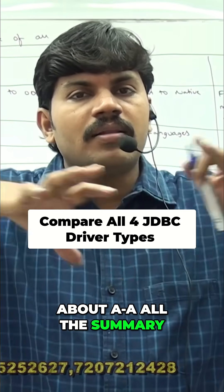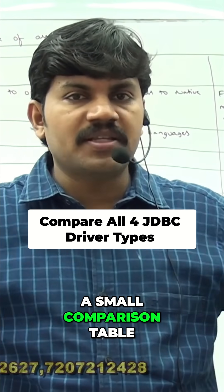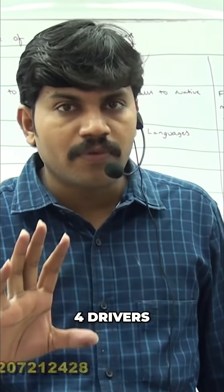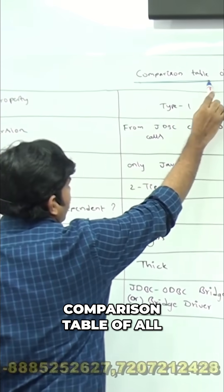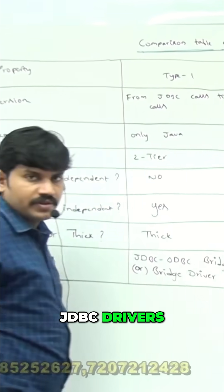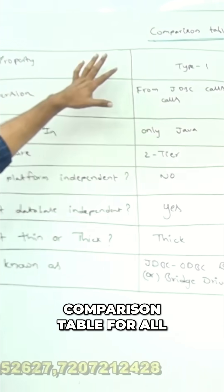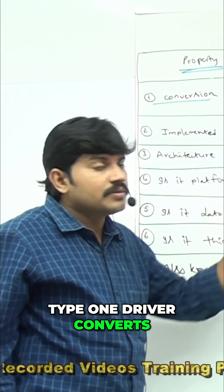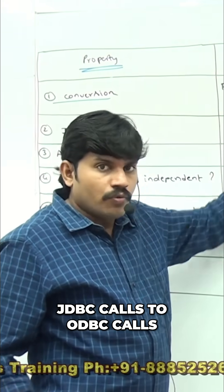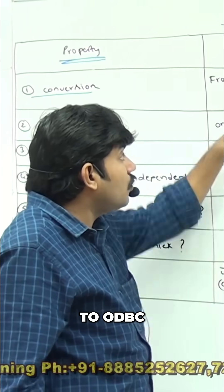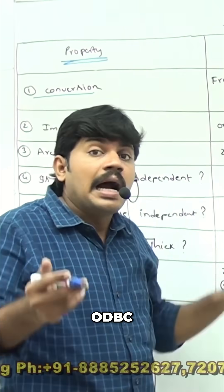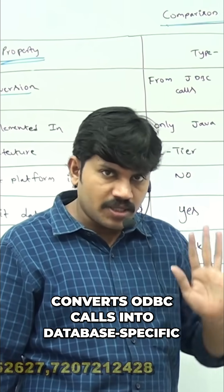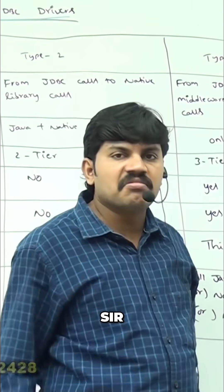Let me talk about a small comparison table which summarizes all properties of all four JDBC drivers. Type 1 driver converts JDBC calls to ODBC calls, and then the ODBC driver converts those ODBC calls into database-specific calls.